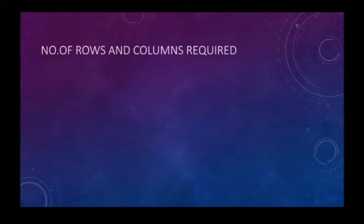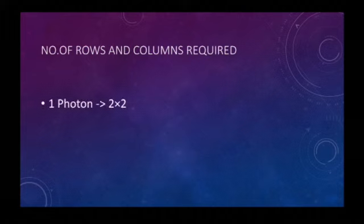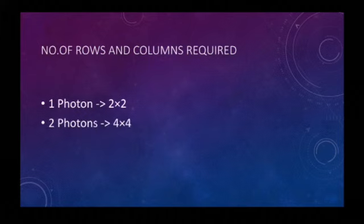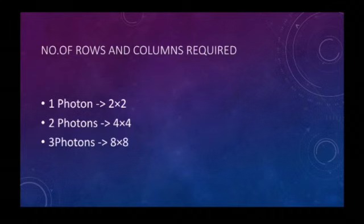Now let's talk about the total number of rows and columns required in these square matrices. Since it is a square matrix, we can obviously say that the total number of columns is the same as the total number of rows. But how many of them do we require? If we consider a single photon, we will require a 2 by 2 matrix. For 2 photons, a 4 by 4 matrix, and for 3, we will require an 8 by 8 matrix.